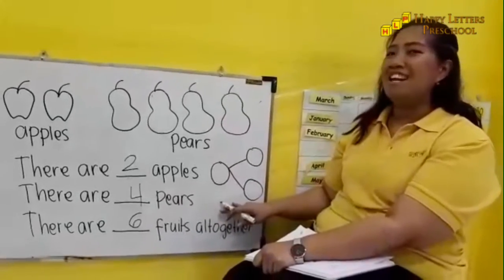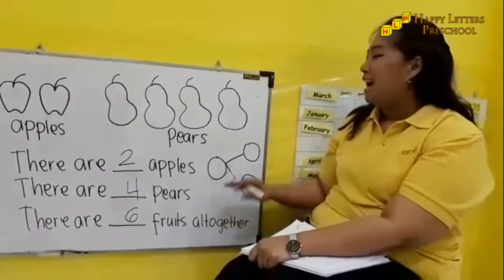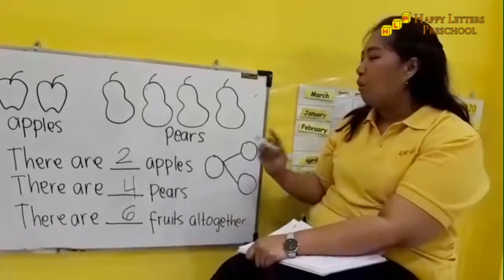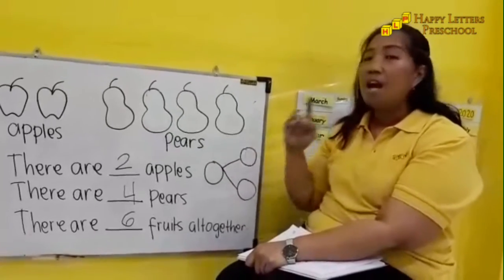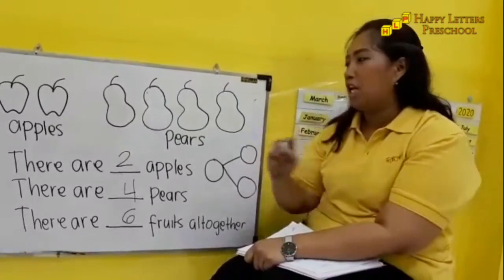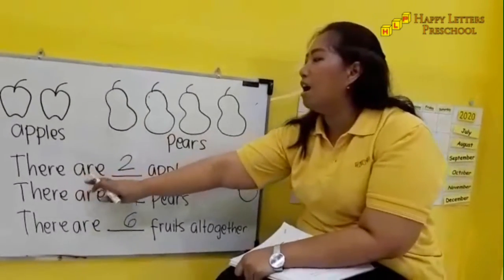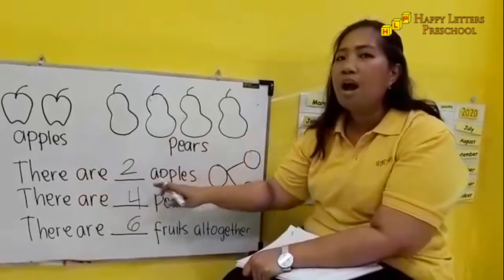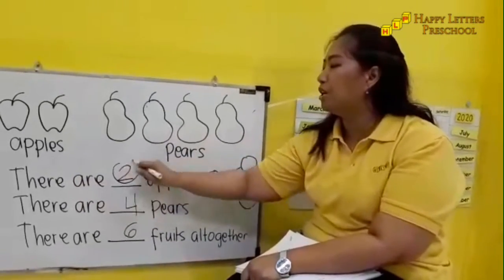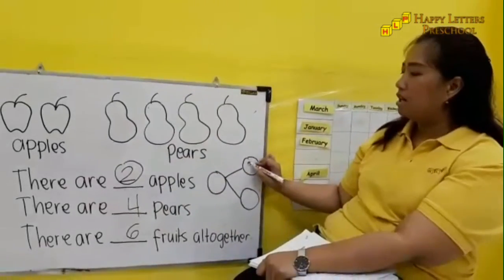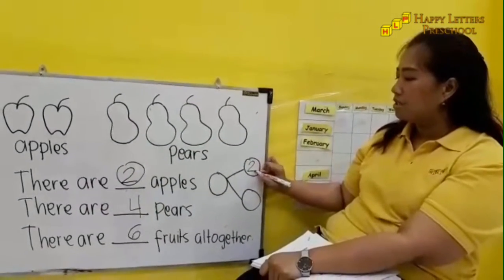There is another blank spot to fill. Let's see what numbers we should fill in here. Let's start from the beginning. There are two apples. Let's write down number two here on the first circle.